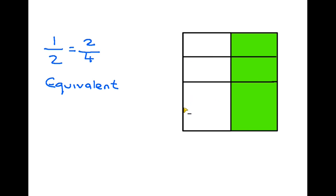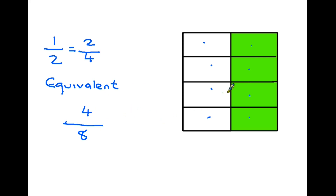I'm going to split this again. I've now broken this down into smaller segments — one, two, three, four, five, six, seven, eight pieces. Out of those eight, four of them are shaded in. But we still haven't changed the amount of the overall shape that is shaded — it is still a half. So four eighths must also be equivalent to one half and two quarters.